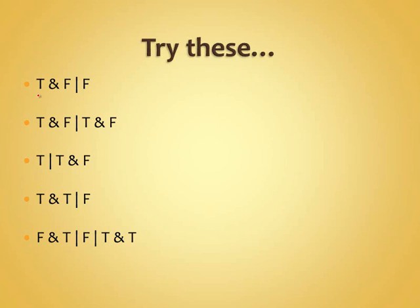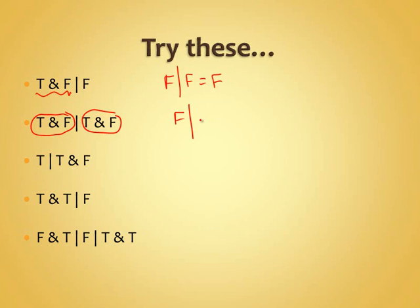Remember, ANDs always go first. So for 'true AND false OR false': true AND false is false, then false OR false is still false. For 'true AND false OR true AND false': true AND false is false, or true AND false is also false, so false OR false is false. For 'true OR true AND false': true AND false is false first, so true OR false is true.